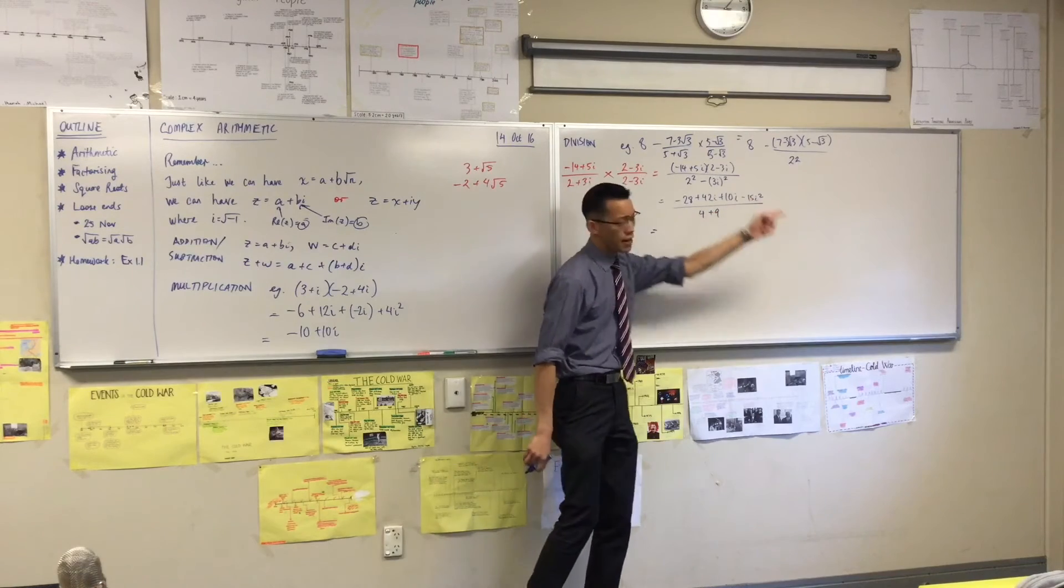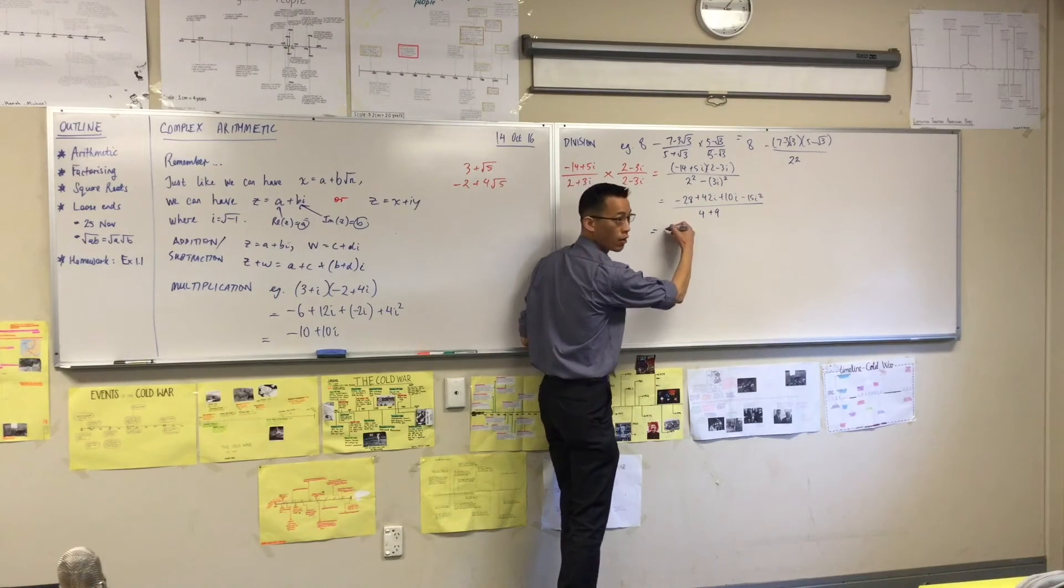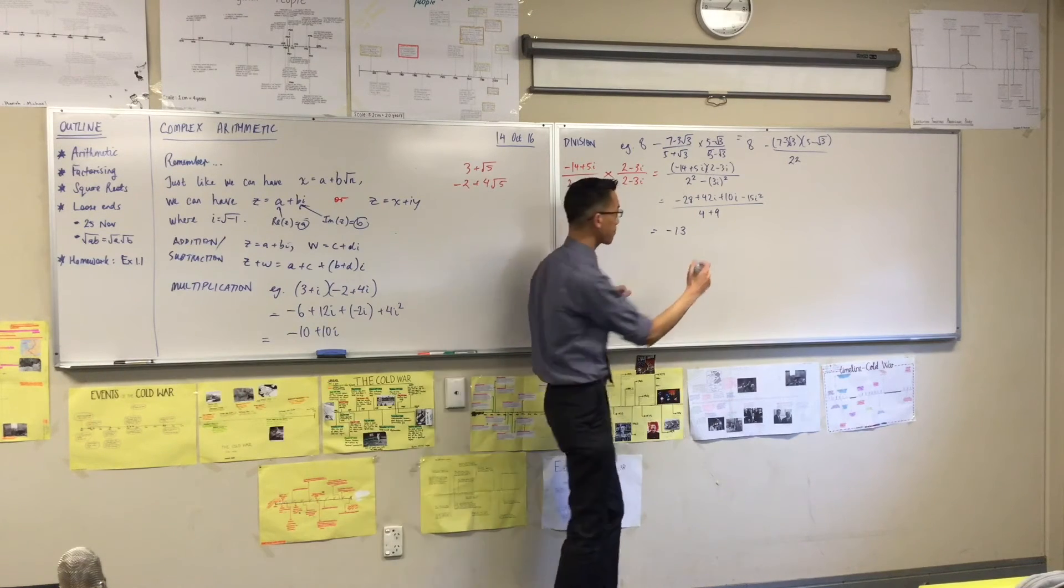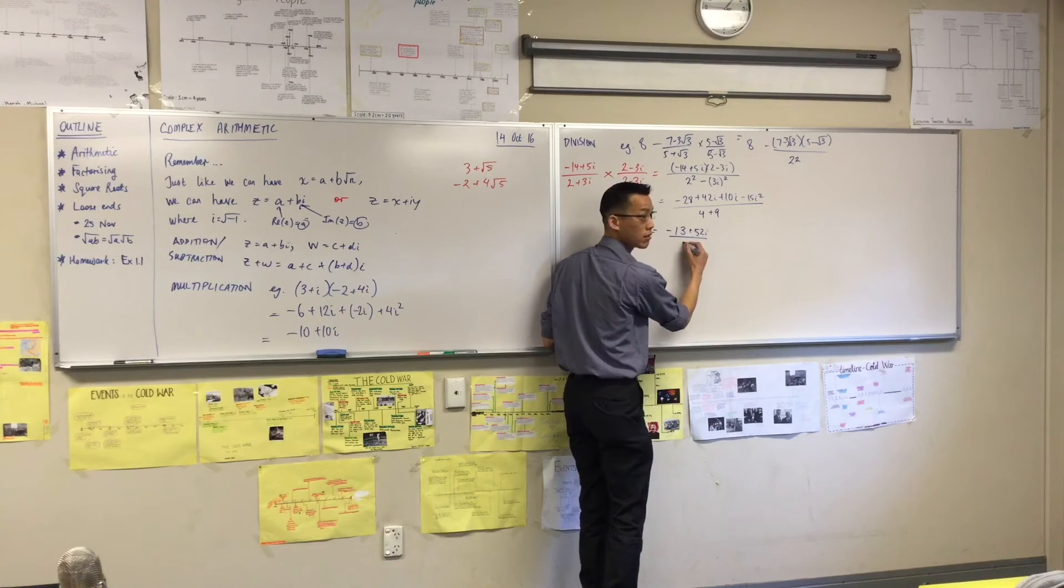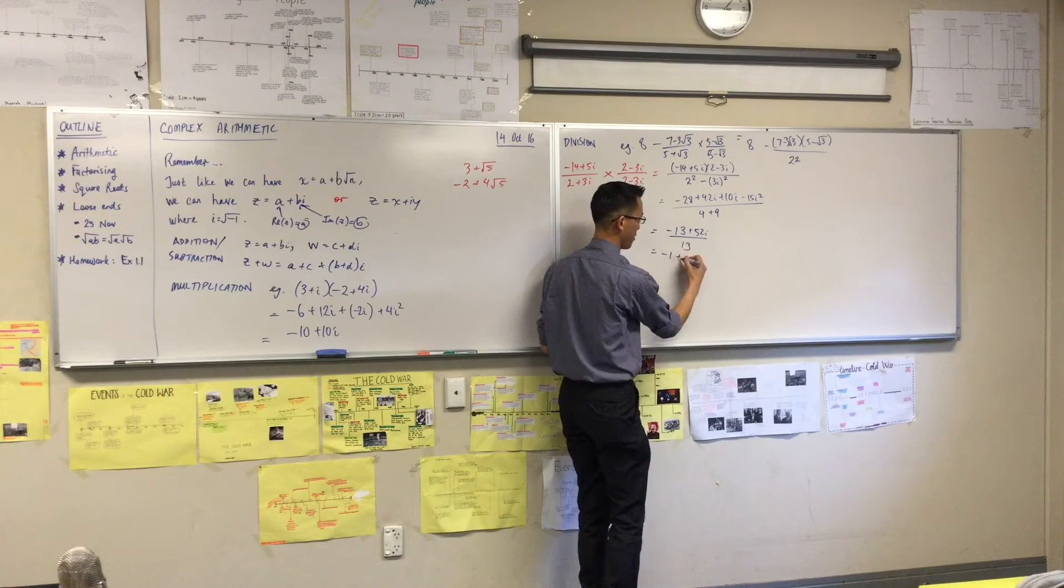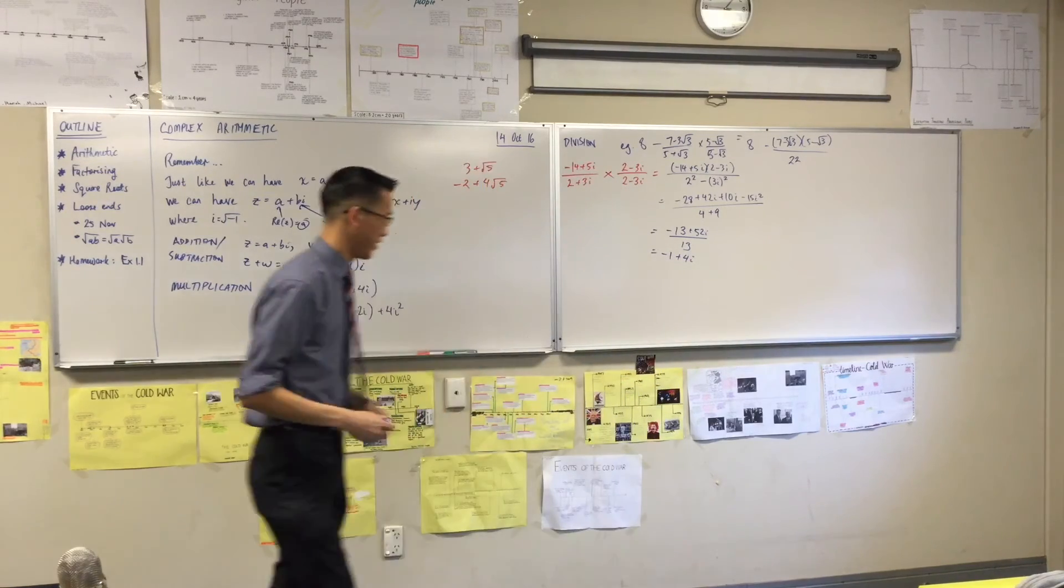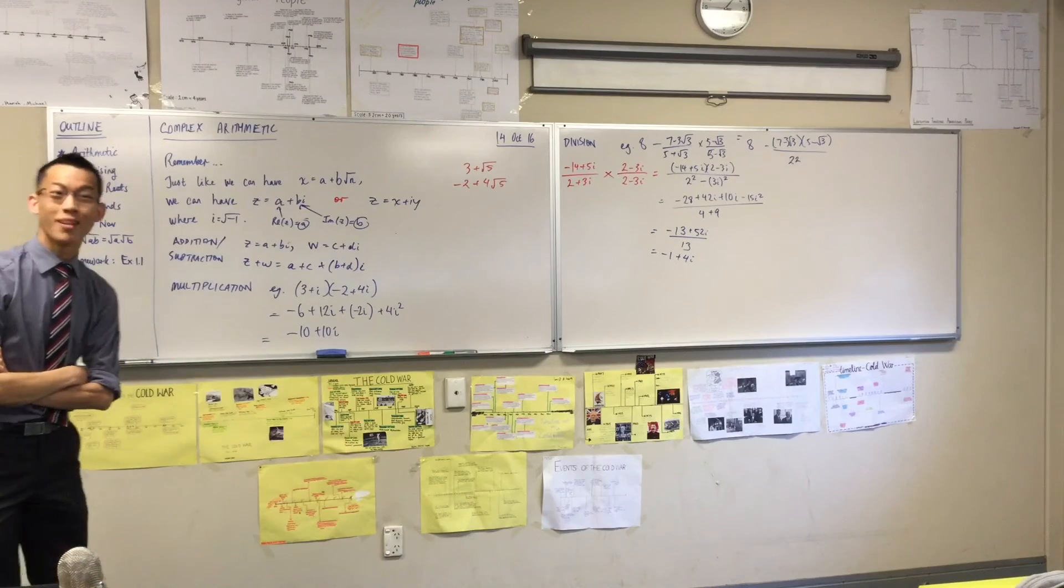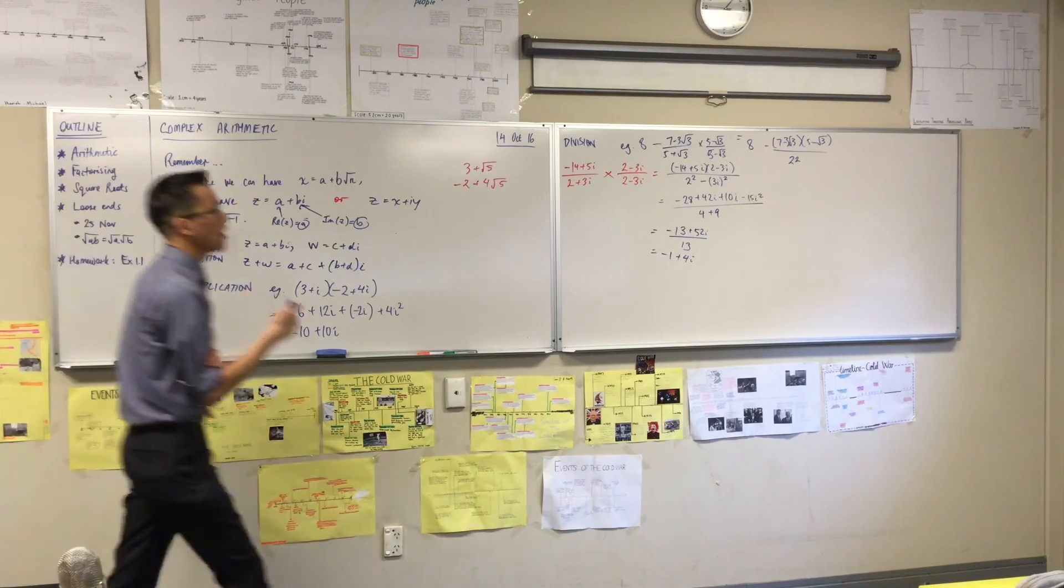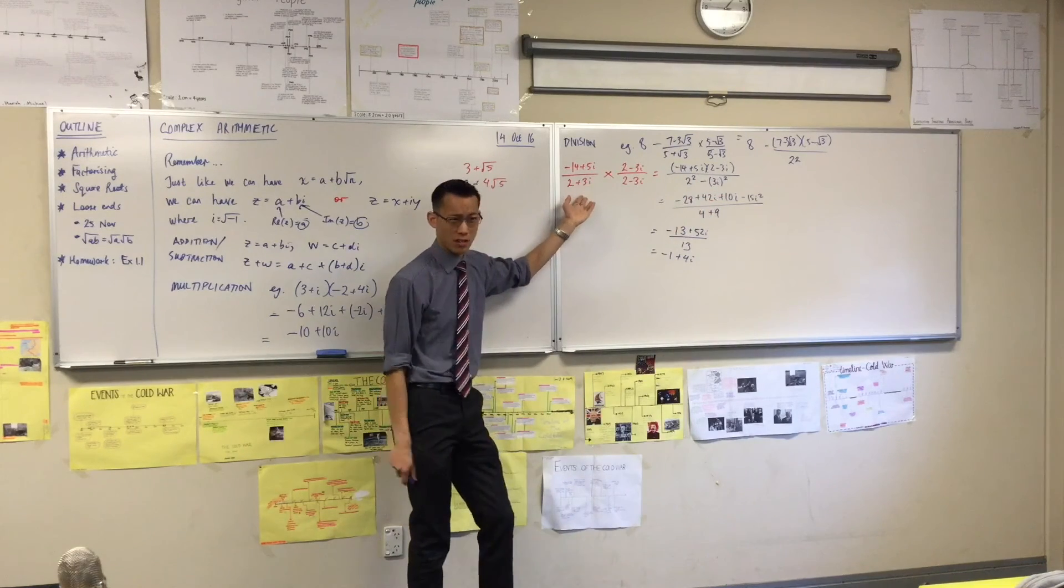Let's just finish this out. That -15i² is going to become a +15. So that leads me to the real part of -13. What's my imaginary part? 52i. On 13, which conveniently leads me with 4, or not conveniently, because I made up this question to give me neat numbers. So what have you done? You've realized the denominator, and that allowed you to get rid of the denominator. That's the whole point of division, isn't it?